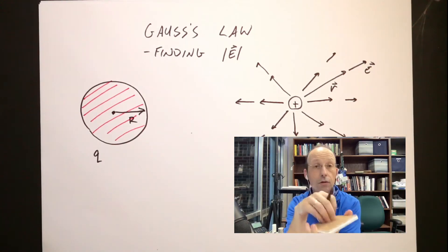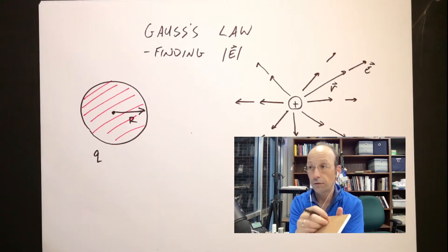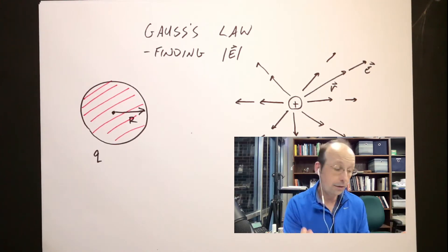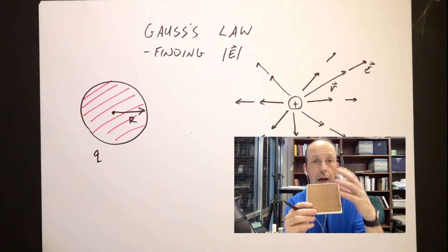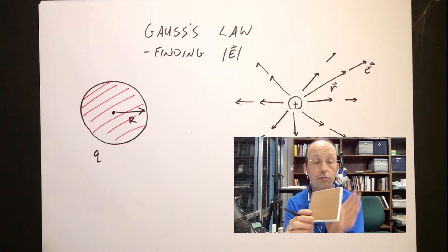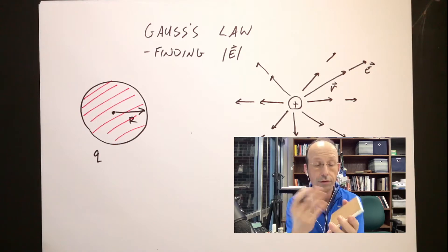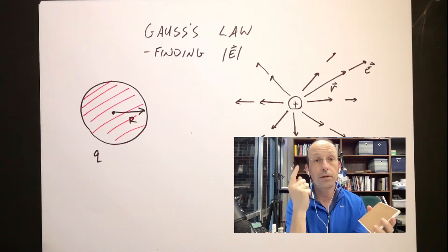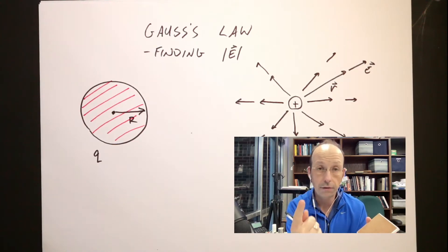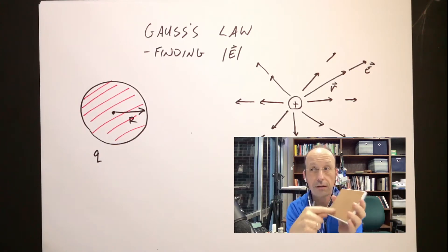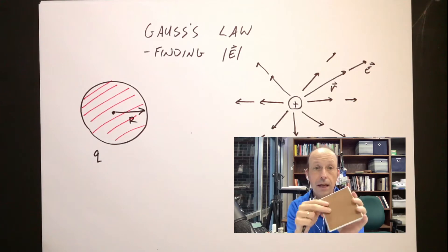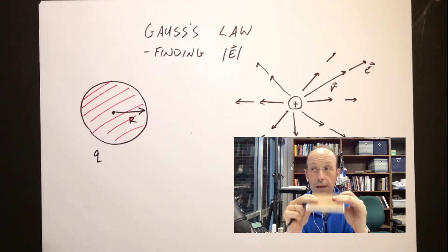Electric flux is the same thing. It's how much electric field crosses through a surface. It depends on the value of the electric field, it depends on the size of the area, and it depends on the orientation.